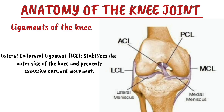So to summarize, the knee has four major ligaments: the anterior cruciate ligament and the posterior cruciate ligament, and then the medial collateral ligament and the lateral collateral ligament.